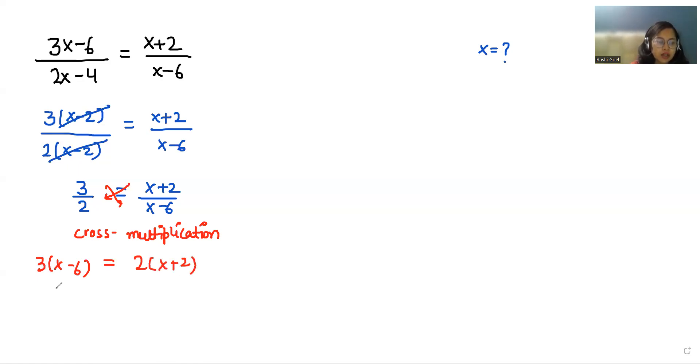So it gives us 3x minus 18 equals 2x plus 4. Now separate the variables and constant. 3x minus 2x equals 4 plus 18.